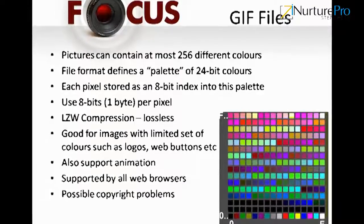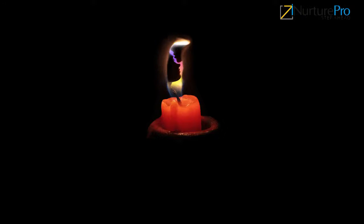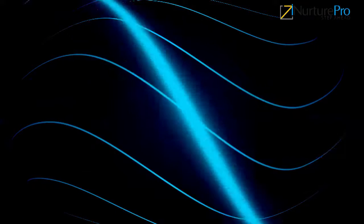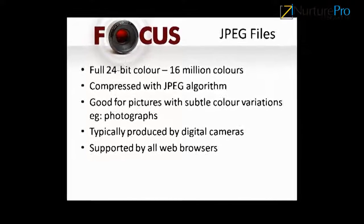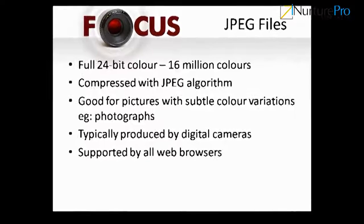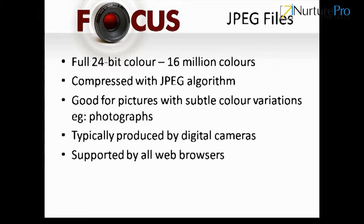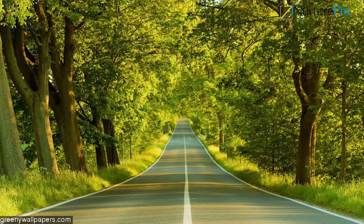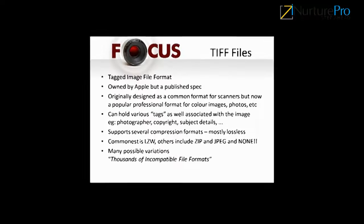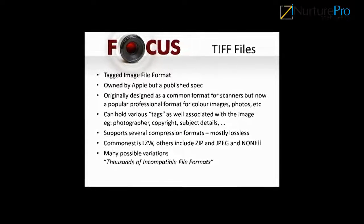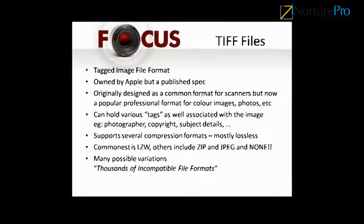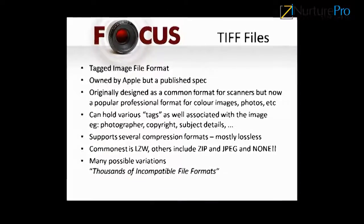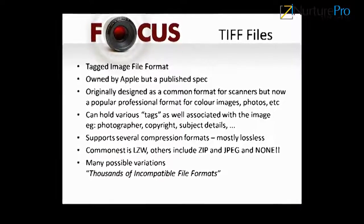GIF format defines a palette of 24-bit colors with each pixel stored as an 8-bit index into this palette, using 1 byte per pixel. It uses LZW compression, which is lossless, and is good for images with a limited set of colors such as logos and web buttons. It also supports animation and is supported by all web browsers, though there are possible copyright concerns. JPEG supports full 24-bit color — 16 million colors — compressed by the JPEG algorithm, and is good for pictures with subtle color variations such as photographs.